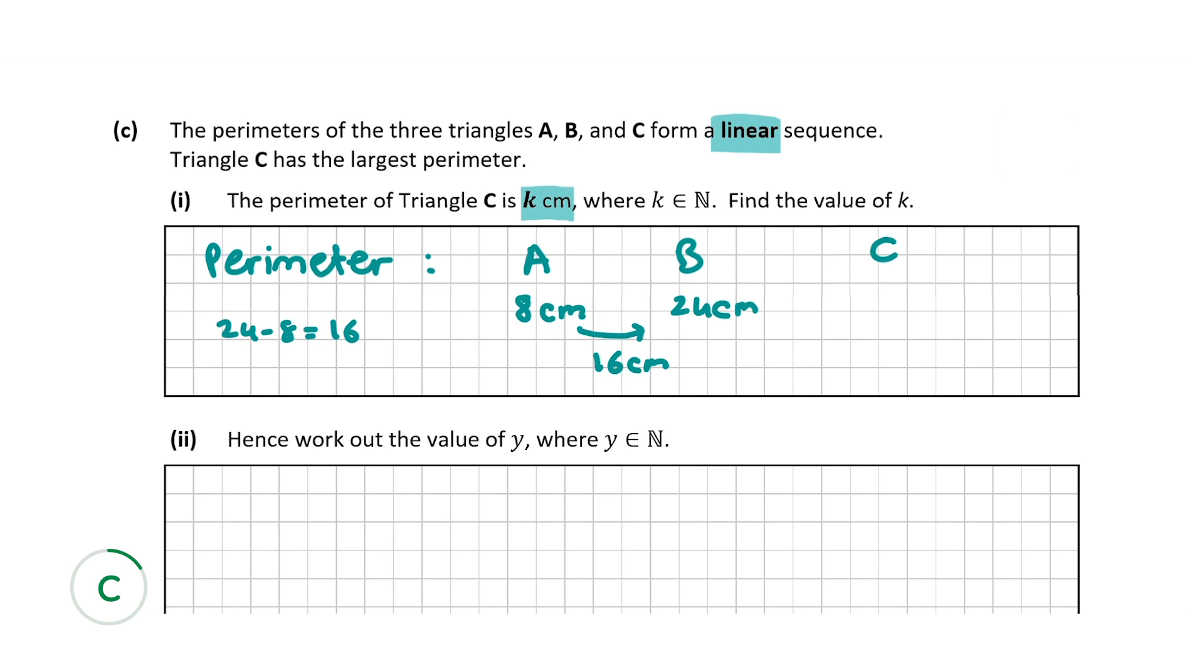So from B to C it also has to jump 16 centimeters because it forms a linear sequence we're told. So 24 plus 16 will give us 40 centimeters. So find the value of K. K is equal to 40. And that's our answer for C part 1.